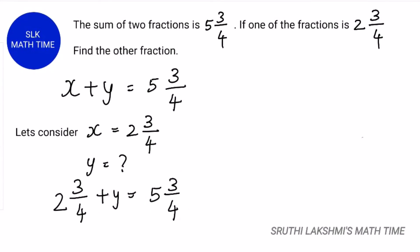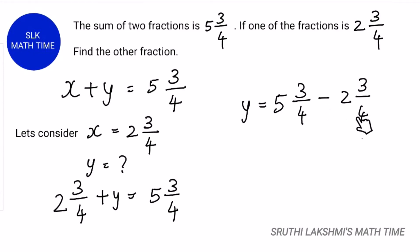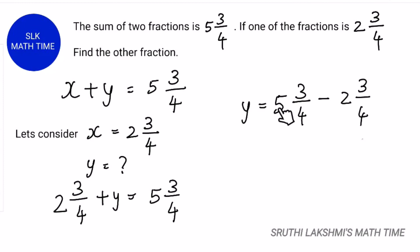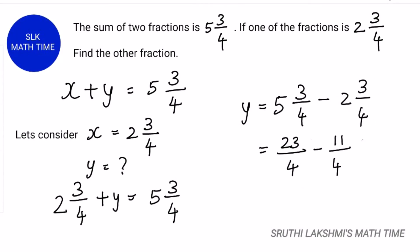When this 2 3 by 4 comes to the other side, it becomes minus 2 3 by 4. Now let's change these mixed numbers into improper fractions. So 4 into 5 is 20 and 20 plus 3 is 23 by 4. And next 4 into 2 is 8 and 8 plus 3 is 11 by 4.